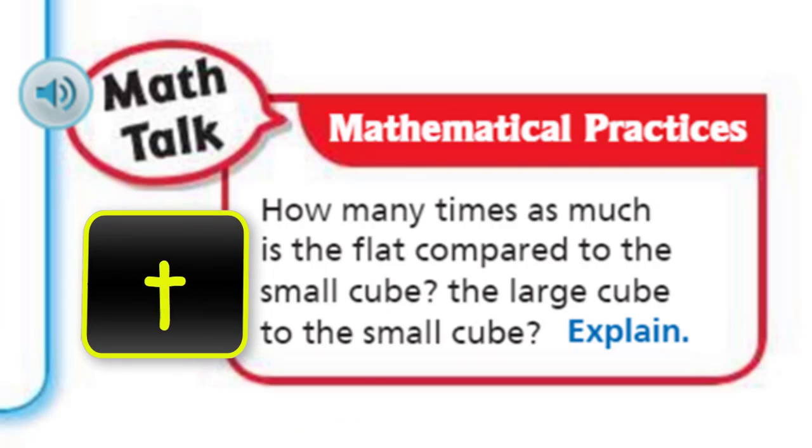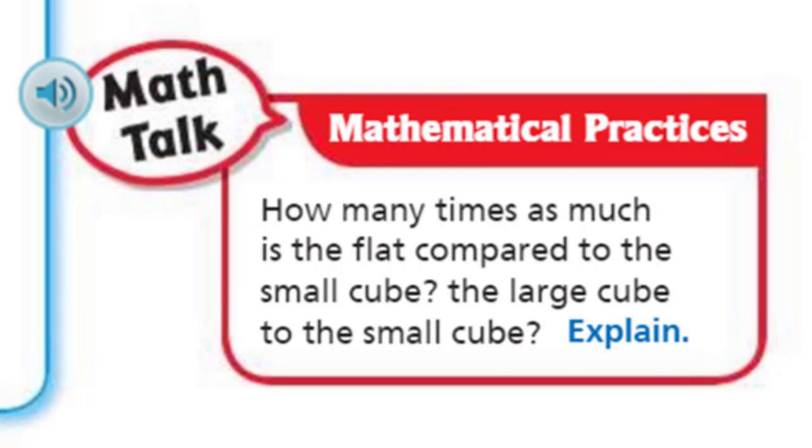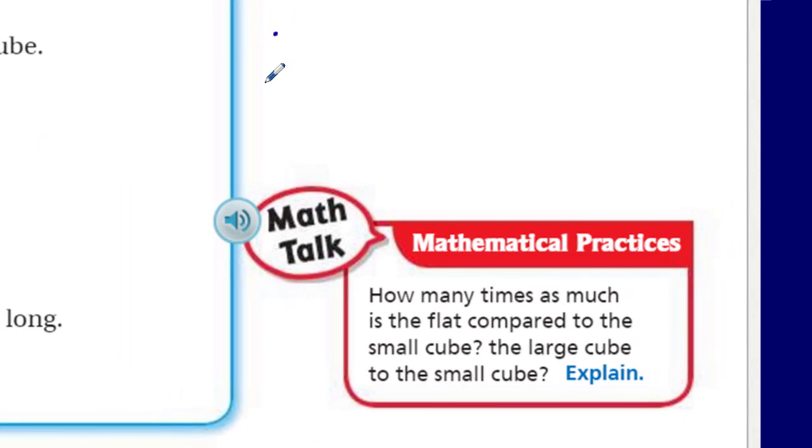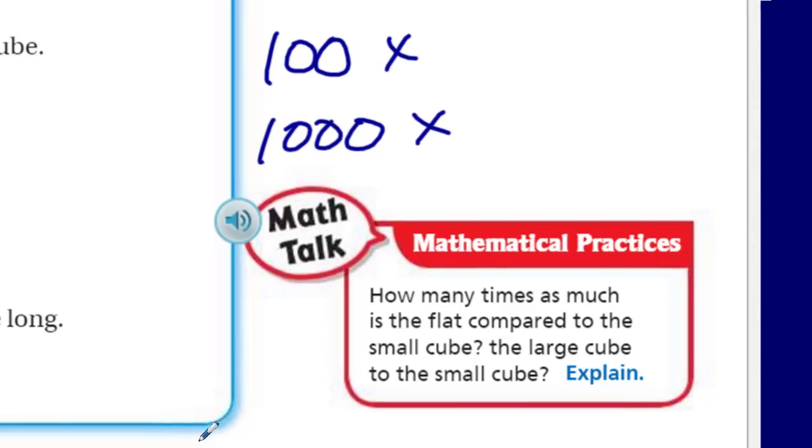We have math talk. It says how many times as much is the flat compared to the small cube? We didn't compare that - the flat compared to the small cube. It wasn't the long. Now in this case because the flat is 100 and the small cube is 1, we can say it's 100 times as much. When we compare the large cube to the small cube, that's going to even grow more. You would need 1,000 of those little small cubes to make up one large cube.